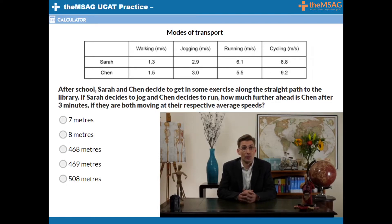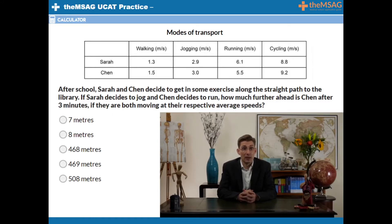Question two: after school, Sarah and Chen decide to get in some exercise along the straight path to the library. If Sarah decides to jog and Chen decides to run, how much farther ahead is Chen after three minutes if they are both moving at their respective average speeds?